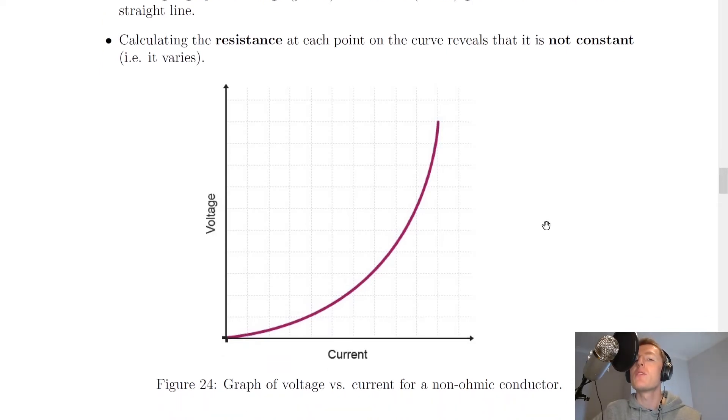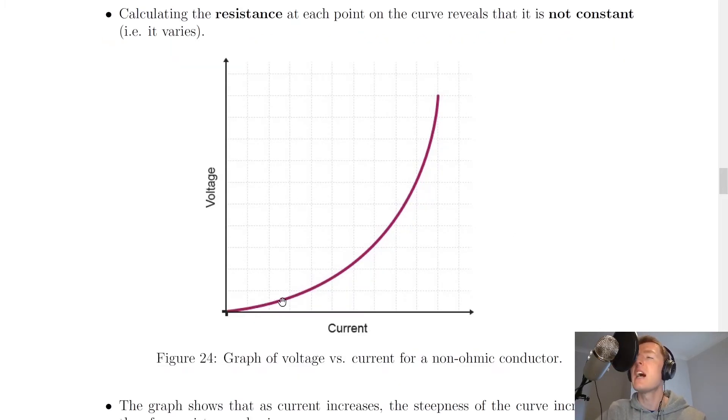So unlike what we saw for the ohmic conductors, where resistance stays the same at all points on the straight line, for a curve, resistance is not going to stay the same.